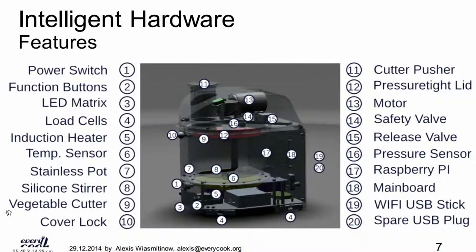The LED matrix on this device has now been replaced by a touchscreen. On this version we have an induction heater and a stainless steel pot — we can stir inside the pot. There's a pusher that can push in vegetables, and inside we have a cutting blade that chops your onion. We have a Raspberry Pi as the brain of the device and a Wi-Fi USB stick so we can connect to the world — and even a spare USB where we could add Bluetooth to connect to other devices.